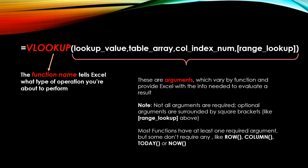Following the function name come the arguments. Arguments are specific to each function and vary by function. They're designed to provide Excel with information needed to evaluate the proper result. In this case with our VLOOKUP function, we have four arguments: the lookup value, table array, column index number, and range lookup.